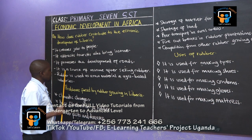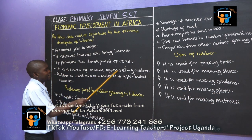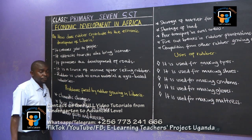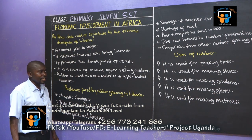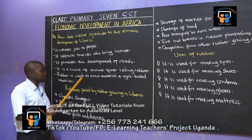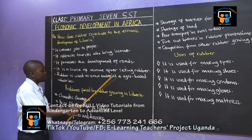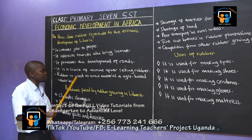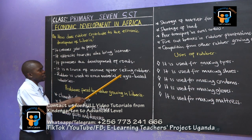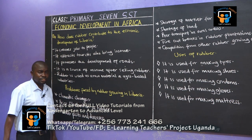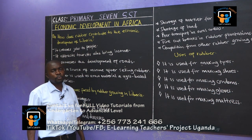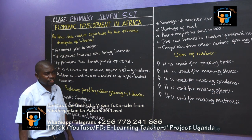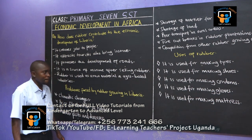Rubber is also a source of income after selling. Lastly, rubber is used as a raw material in agro-based industries — industries that use agricultural products as their raw materials. There are some industries that use rubber as a raw material.